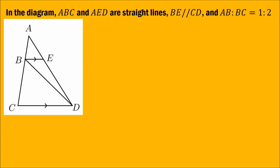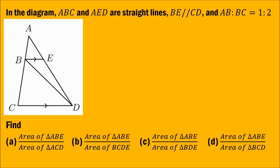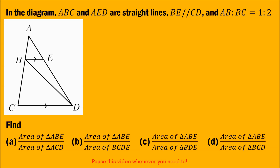BE is parallel to CD, and AB is to BC is 1 is to 2. We need to find the following: firstly, the area of triangle ABE over the area of triangle ACD; next, the area of triangle ABE over the area of trapezium BCDE; then, the area of triangle ABE over the area of triangle BDE; and lastly, the area of triangle ABE versus the area of triangle BCD. Please do not hesitate to pause this video whenever you need to.